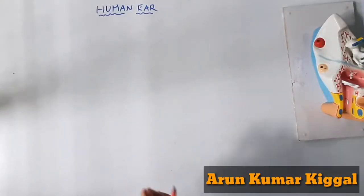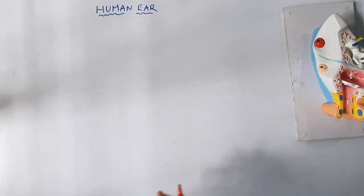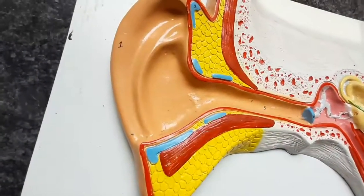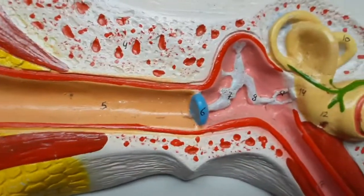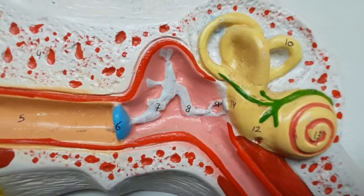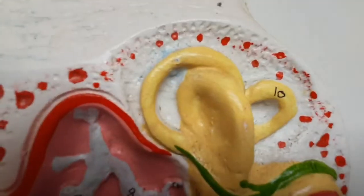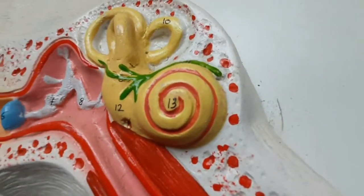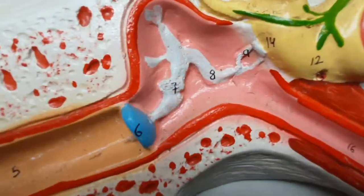I'm going to speak about the human ear — its structure and function. The ear plays an important role: it collects sound in the form of vibrations, transmits them into the inner part of the ear, and auditory nerves connected to the inner ear carry that vibration as action potentials to the auditory cortex region of the brain.